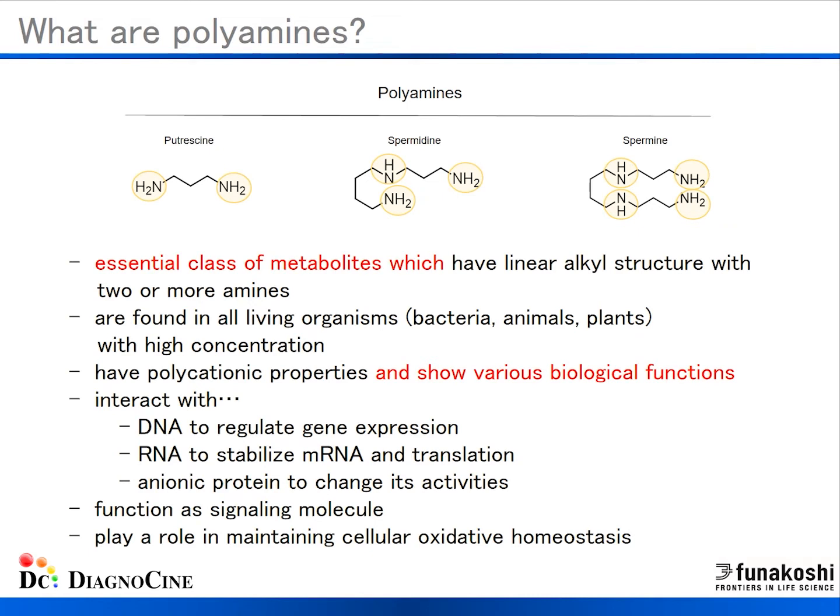What are polyamines? Polyamines are central metabolites which have a linear alkyl structure with two or more amines. Polyamines exist in all living organisms like bacteria, animals, and plants with high concentration, have polycationic properties, and show various biological functions.